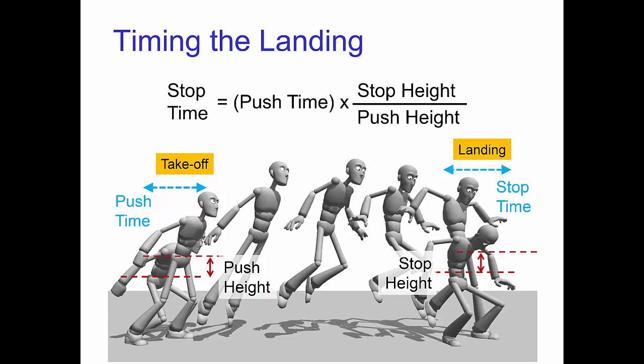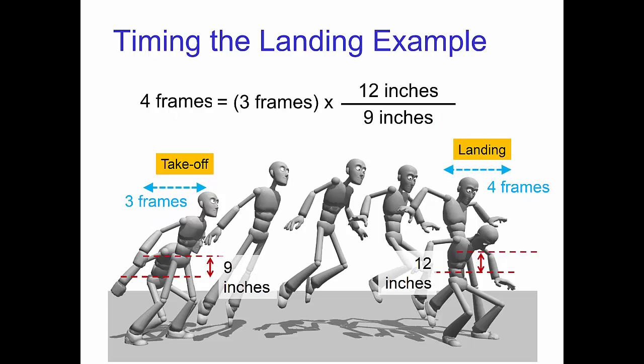The stop time equals the push time multiplied by the ratio of the stop height to the push height. Now that sounds complicated, but it's really not. Here's an example. Let's say we push off for nine inches and the takeoff is in three frames. Now, suppose the landing has a slightly deeper crouch of 12 inches, so it will take longer than three frames to stop. In fact, when you work out the math, you find that the stop time is four frames.